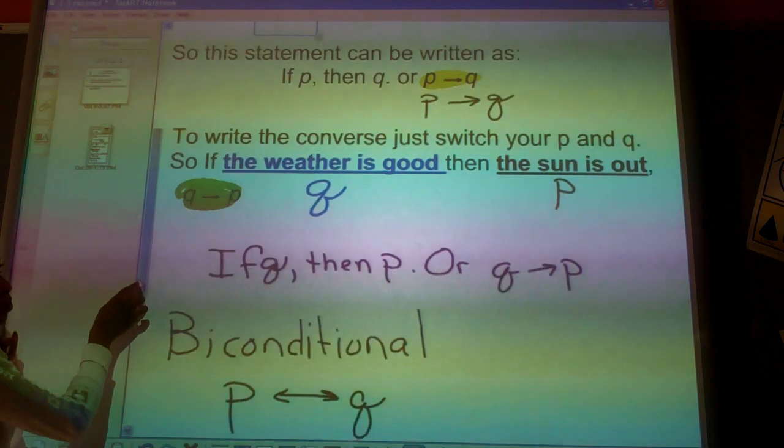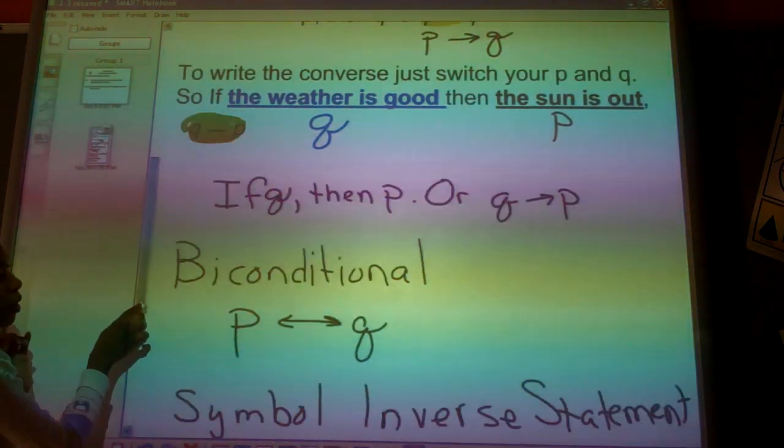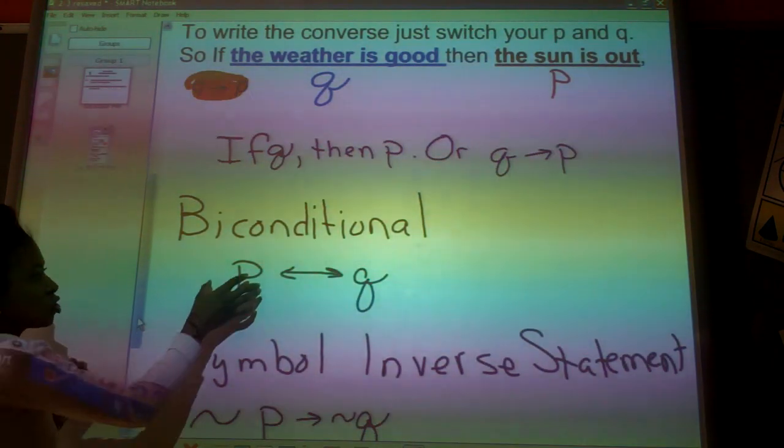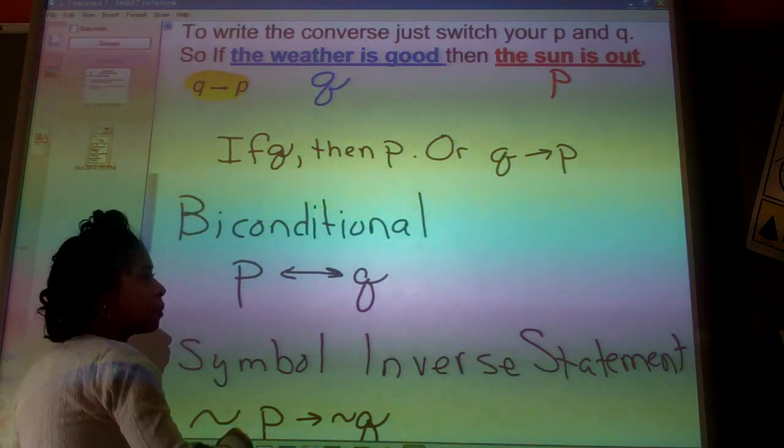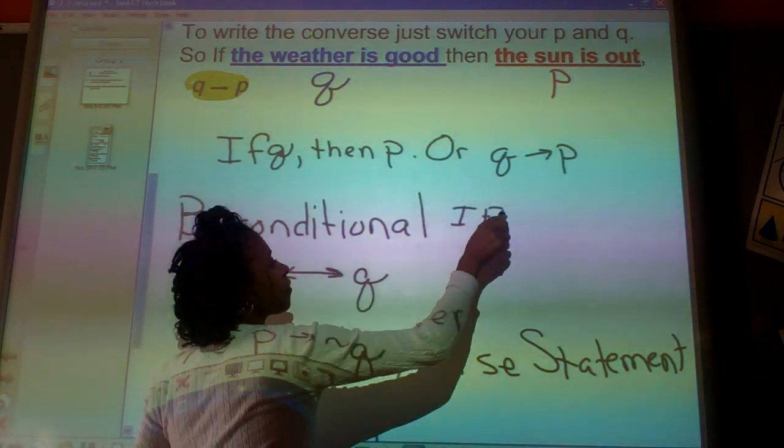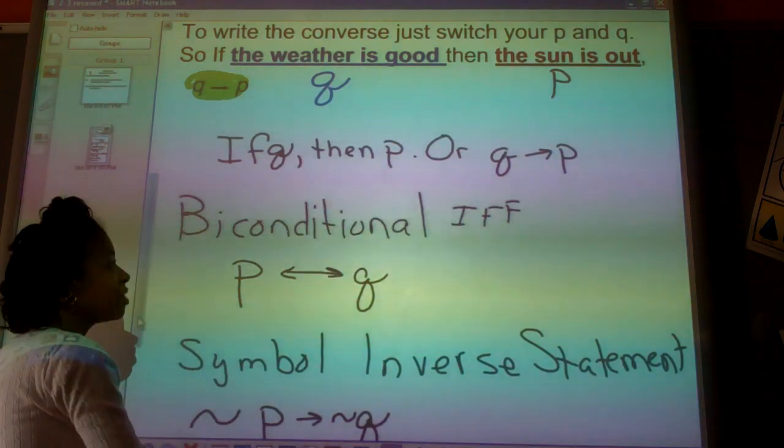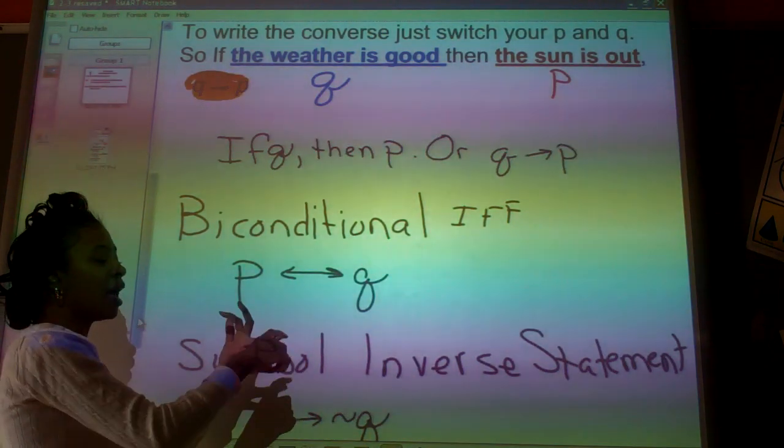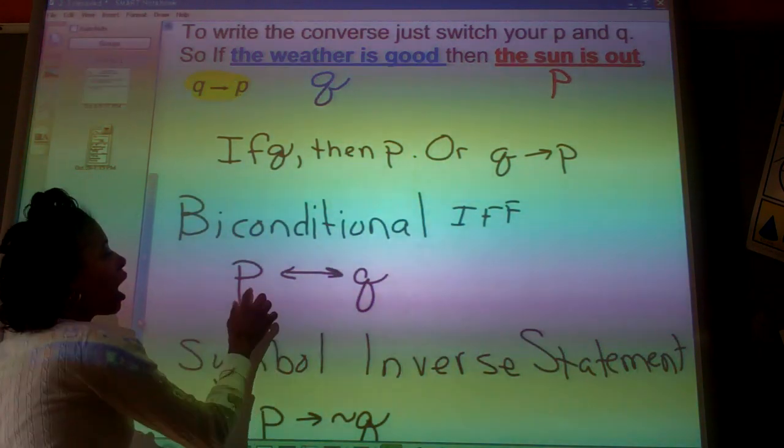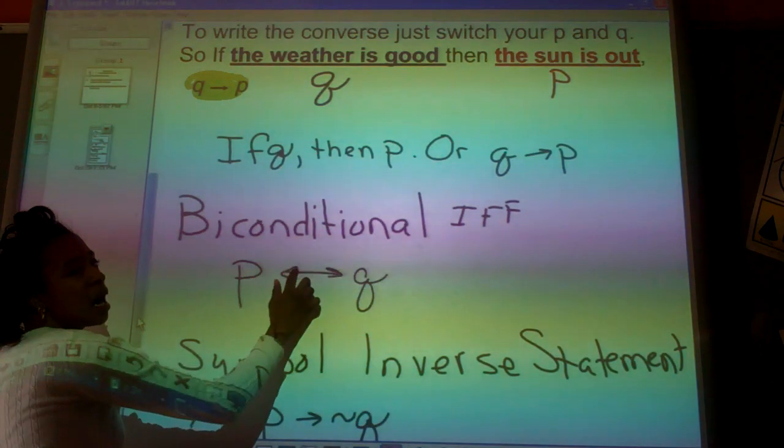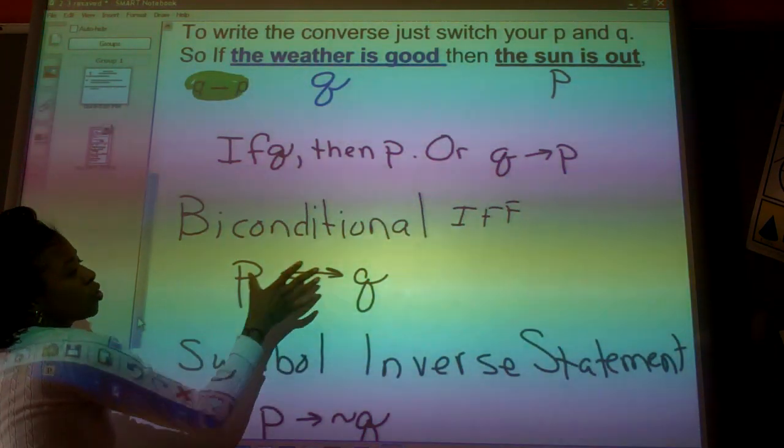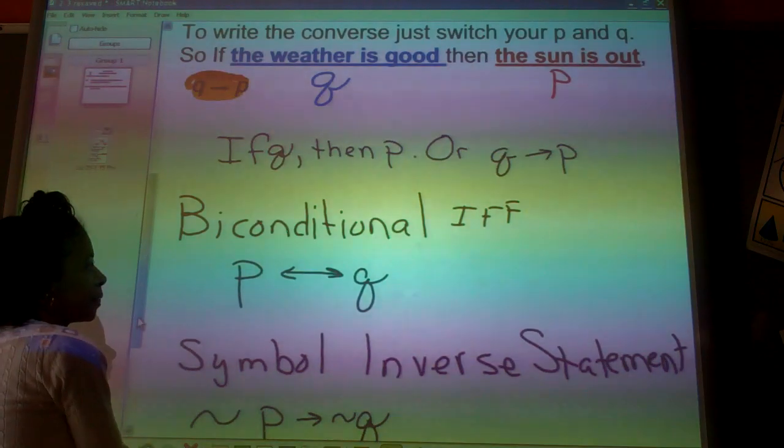Continuing on, if I have a biconditional statement, remember the biconditional statement is the one with the IFF, if and only if. That's when your conditional statement and your converse agree. I write P, then I put a double arrowhead, Q, so that you do their if and only if.